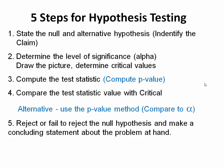In step five, we're going to reject or fail to reject the null hypothesis and make a concluding statement about the problem at hand. We're also going to use it to support or deny any particular claim that is made about the population parameter.